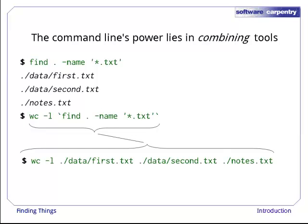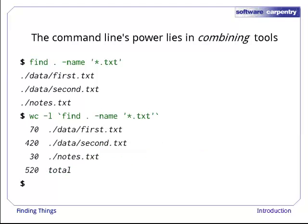The shell then replaces the back quotes with that output to construct the command wc -l data/first.txt data/second.txt and notes.txt. And as you can see, that does what we originally wanted.